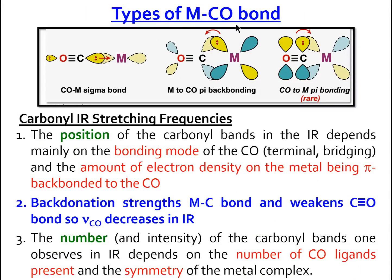The types of M-CO bonding affect the stability of the bond M-C and that of the carbonyl. We have three types: (1) CO→M sigma bond, (2) M→CO π back bonding — these two modes are common — and (3) CO→M π bonding, which is a rare case.